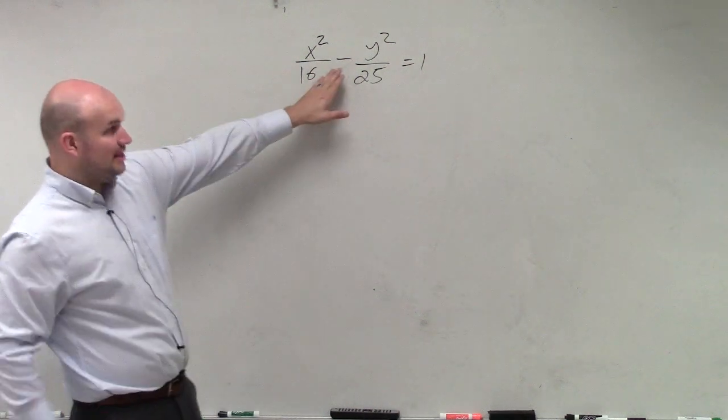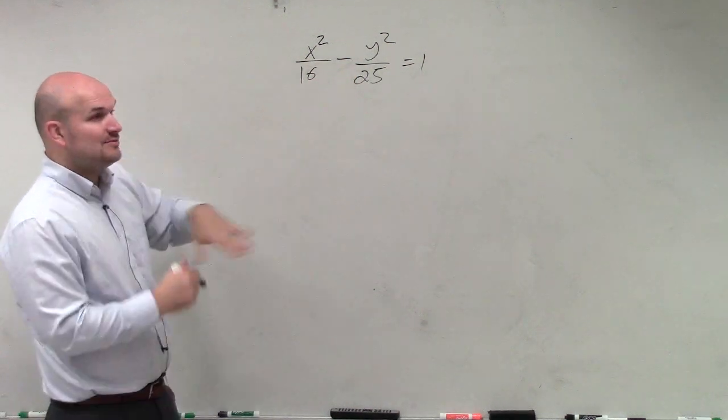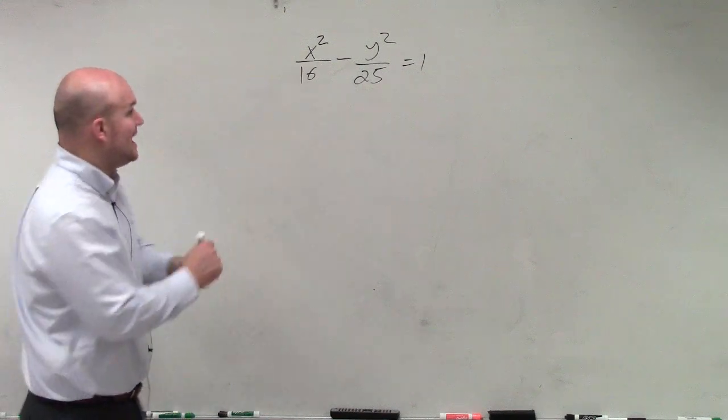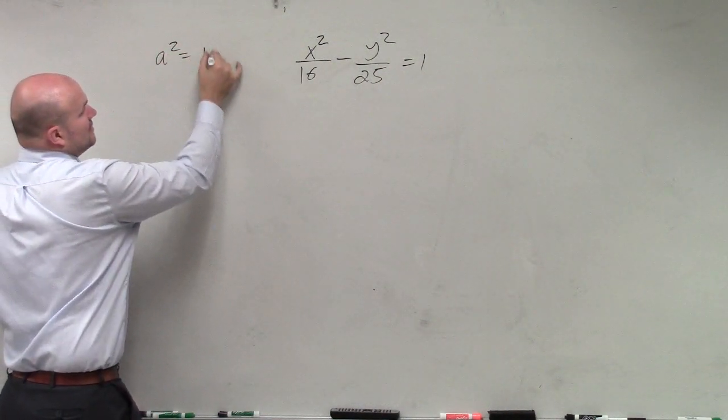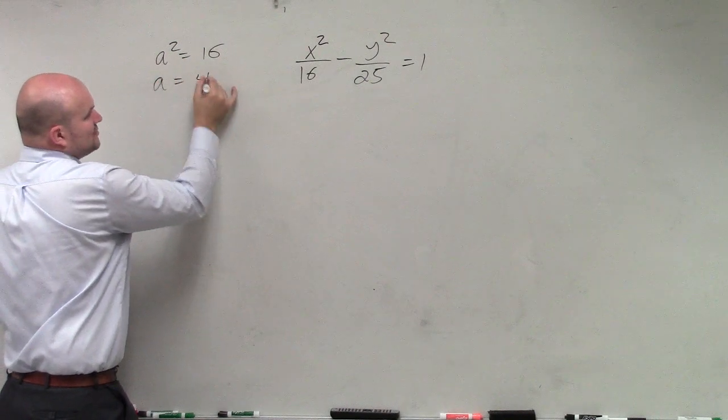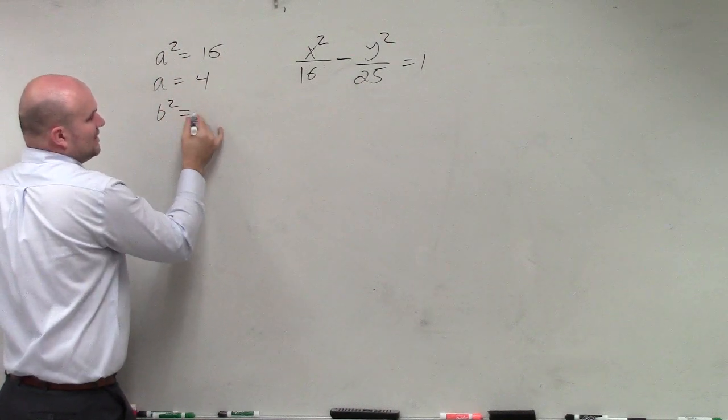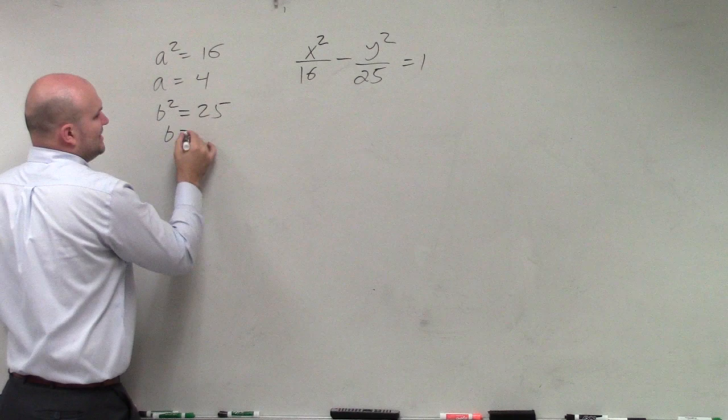But remember, since this is a hyperbola, because you're subtracting, my a squared is always my first term. So now it's not the largest. a squared now is equal to 16. So therefore, a is equal to 4. b squared is equal to 25. b is equal to 5.